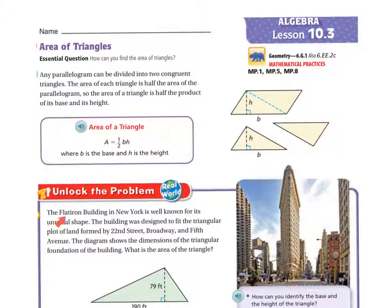So let's unlock the problem. The Flatiron Building in New York is well known for its unusual shape. The building was designed to fit the triangular plot of land formed by 22nd Street, Broadway, and 5th Avenue. The diagram shows the dimensions of the triangular foundation of a building. What is the area of the triangle?